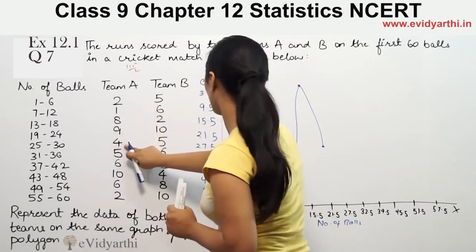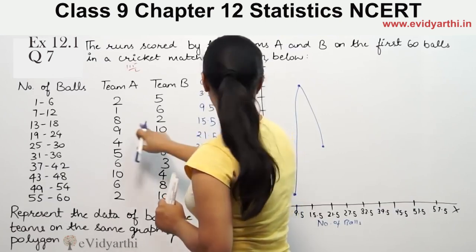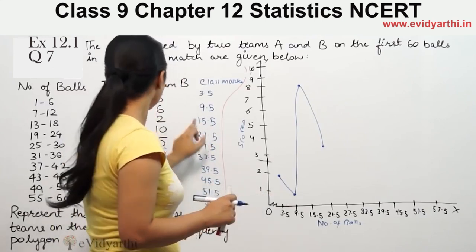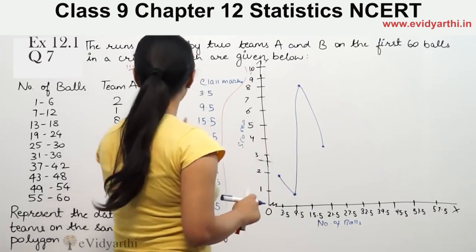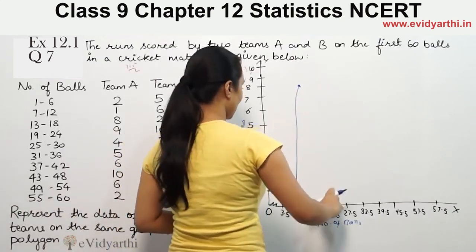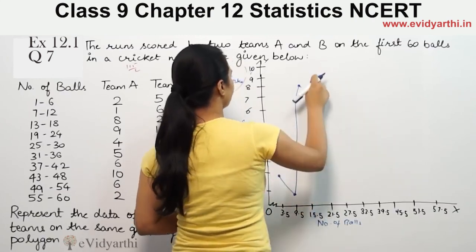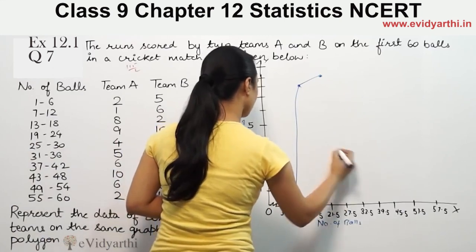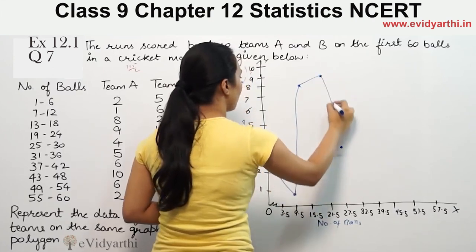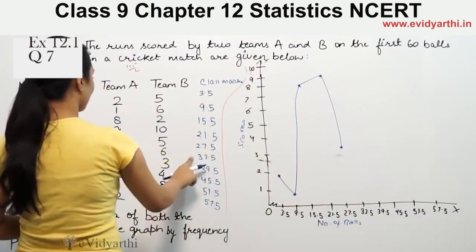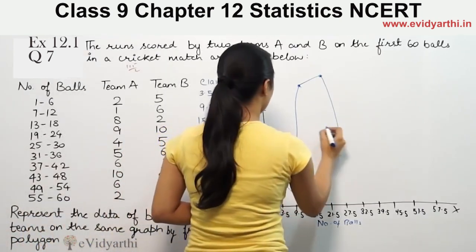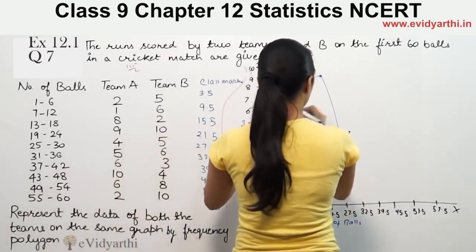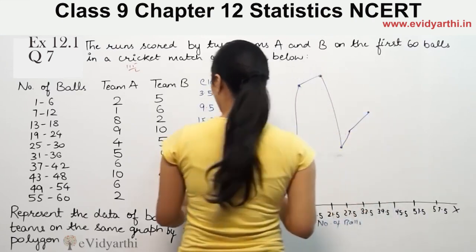Continuing to plot Team A: 27.5 goes to 4. Then 33.5 goes to 5. Then 39.5 goes to 6. Then 45.5 goes to 10. Then 51.5 goes to 6.